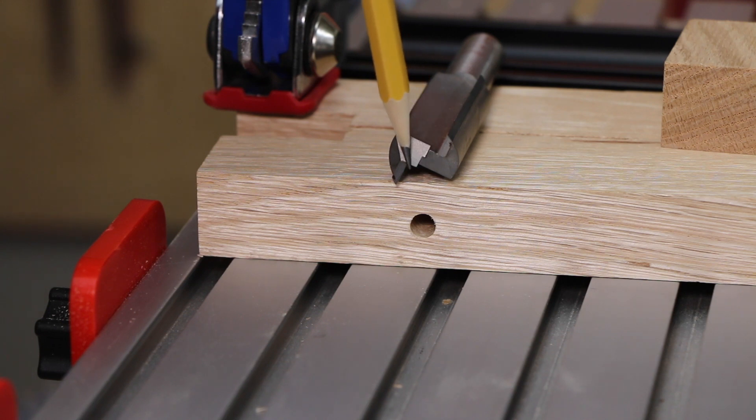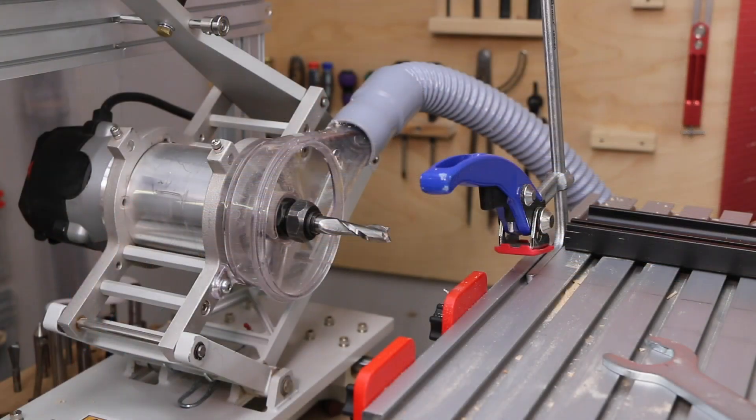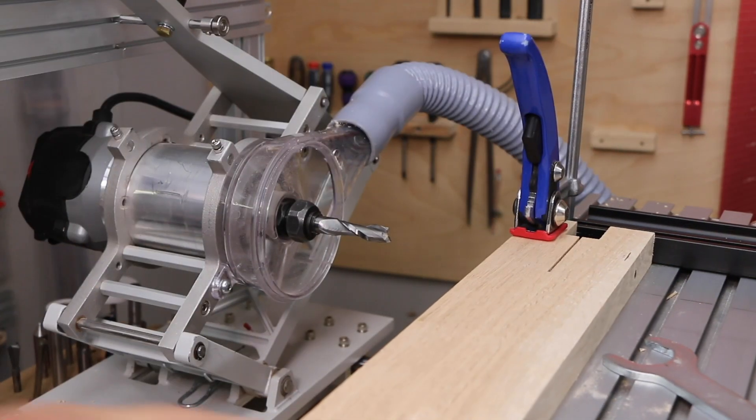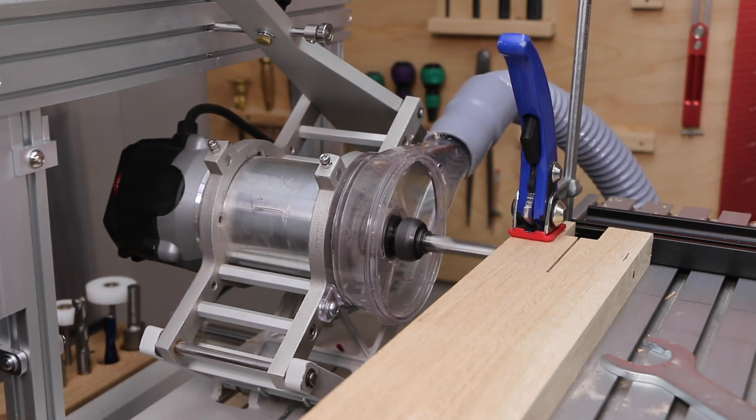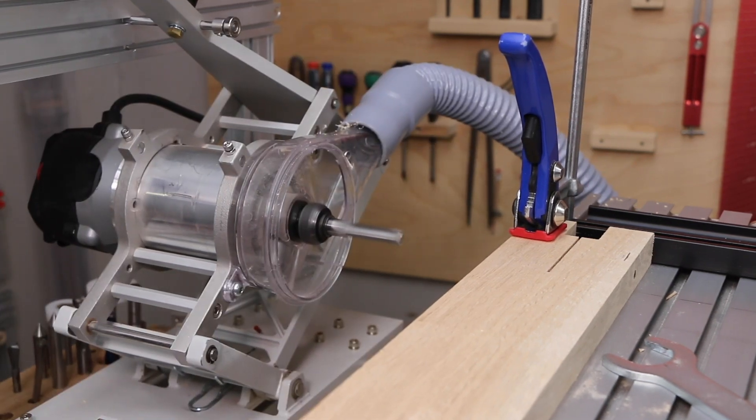Our three-quarter inch bits have no cutting flutes in the center, so they can't be used to bore straight in without a relief cut. We chucked up a half inch bit to bore out the center, then finished the job with a big three-quarter inch bit.